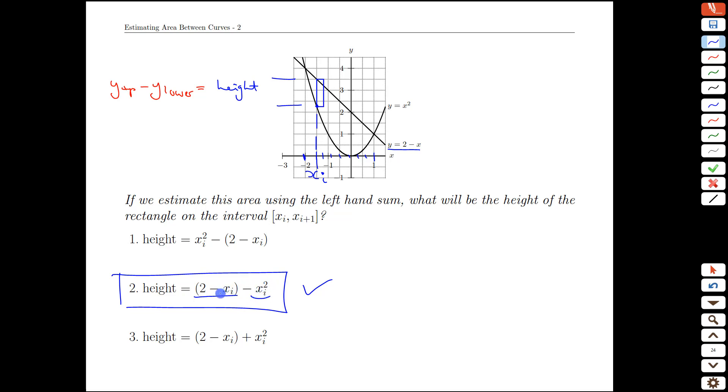We usually think of quadratics being bigger than linear functions but if you look specifically on the domain we're talking about you can clearly see that the line defined by 2 minus x is above the parabola y equals x squared. Keep that formula in mind as we move to the next page.